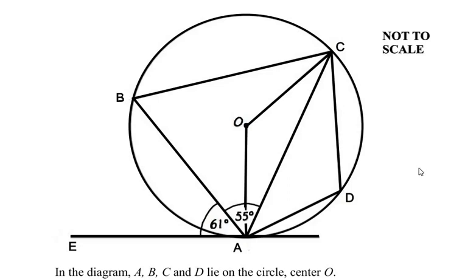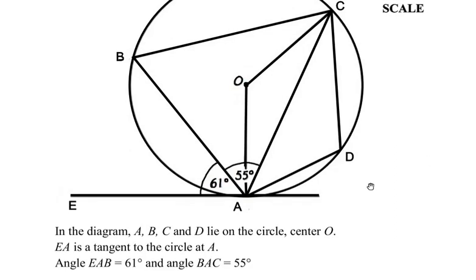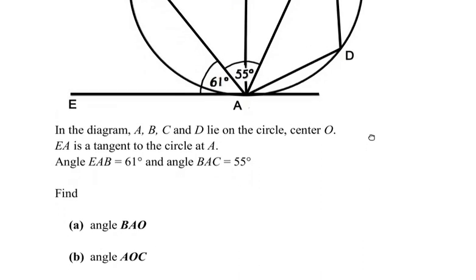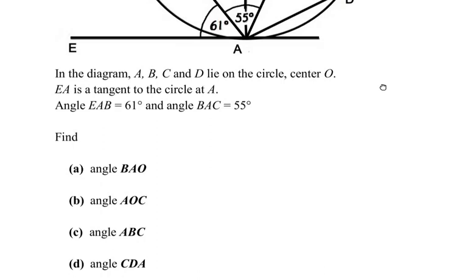Hello and welcome to my channel. In this video we are going to solve an example from circle theorems. In the diagram, points A, B, C and D lie on a circle with center O. EA is a tangent to the circle at point A. Angle EAB is given as 61 degrees and angle BAC is given as 55 degrees. We have to find out four angles: angle BAO, AOC, ABC and CDA.